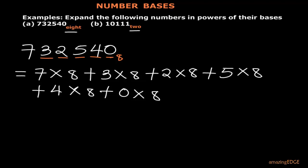So how do we assign the powers? We start from the last 8. The last 8 is assigned the power of 0. Then the next 8 gets the power of 1, the next gets power 2, the next gets power 3, the next gets power 4, and the next gets power 5. This is how it is done, and with that you have completed the expansion in base 8.